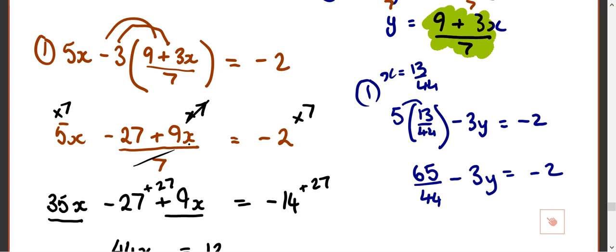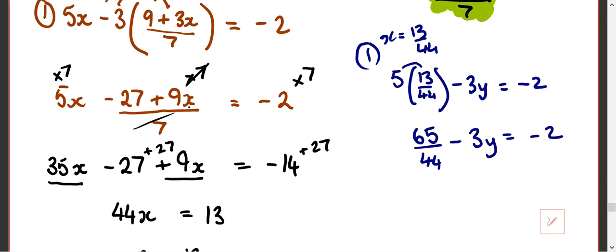What do you do now? Minus 65 over 44. Or plus. Well I would actually, I'm going to add 3y and add 2. So it becomes 65 over 44 plus 2 equals 3y.